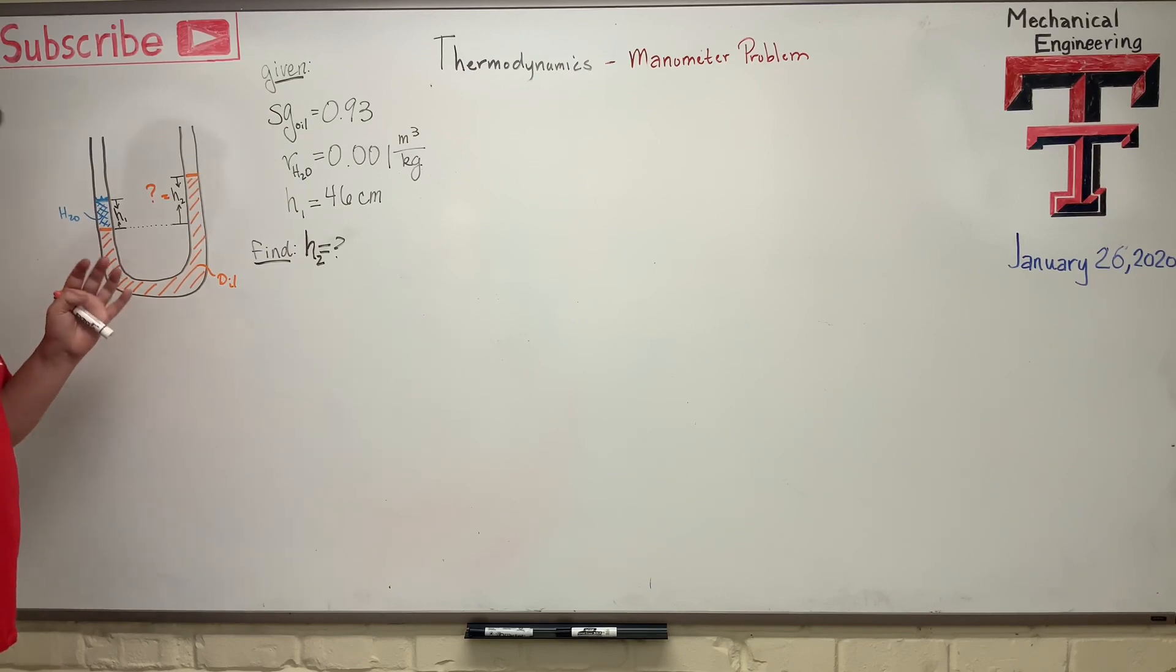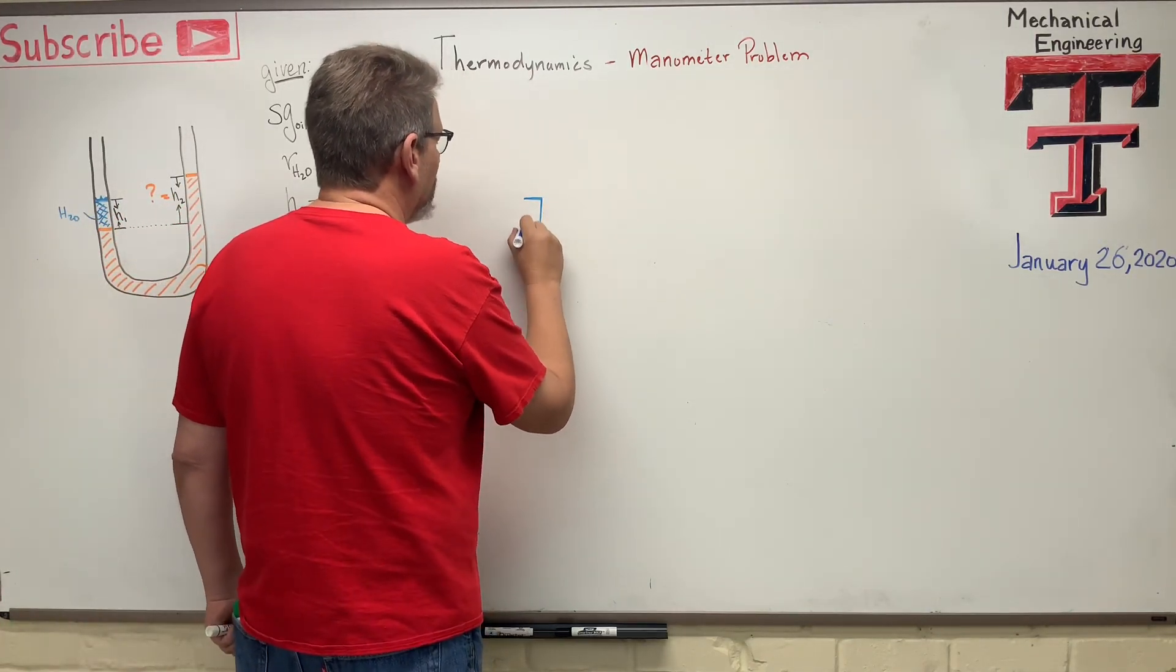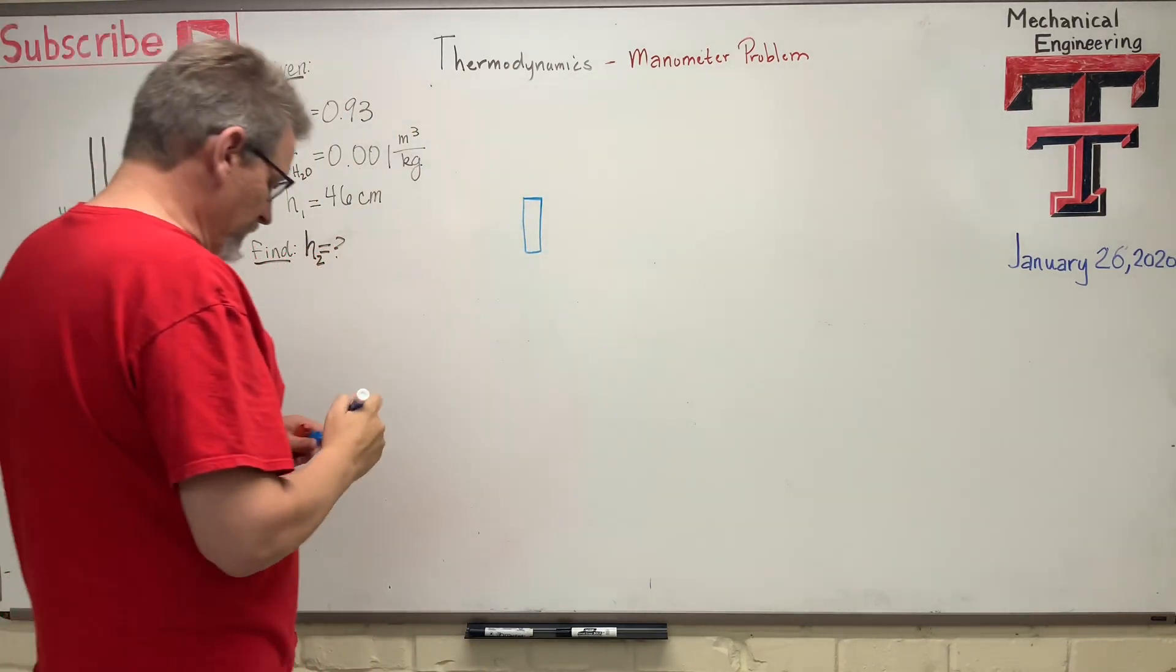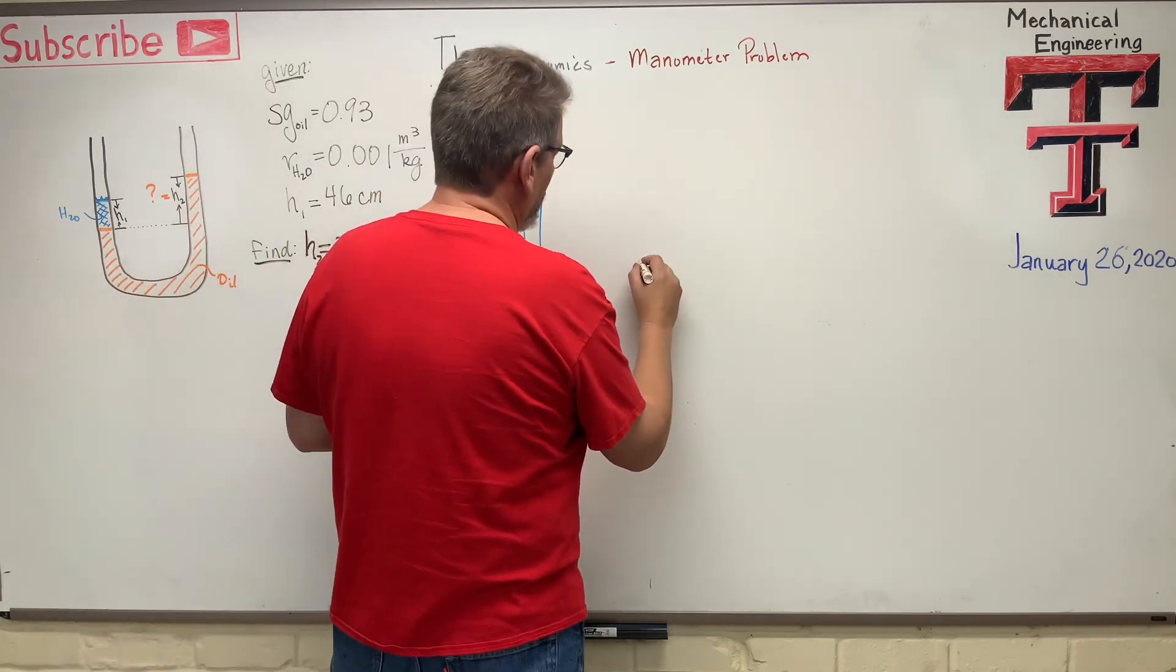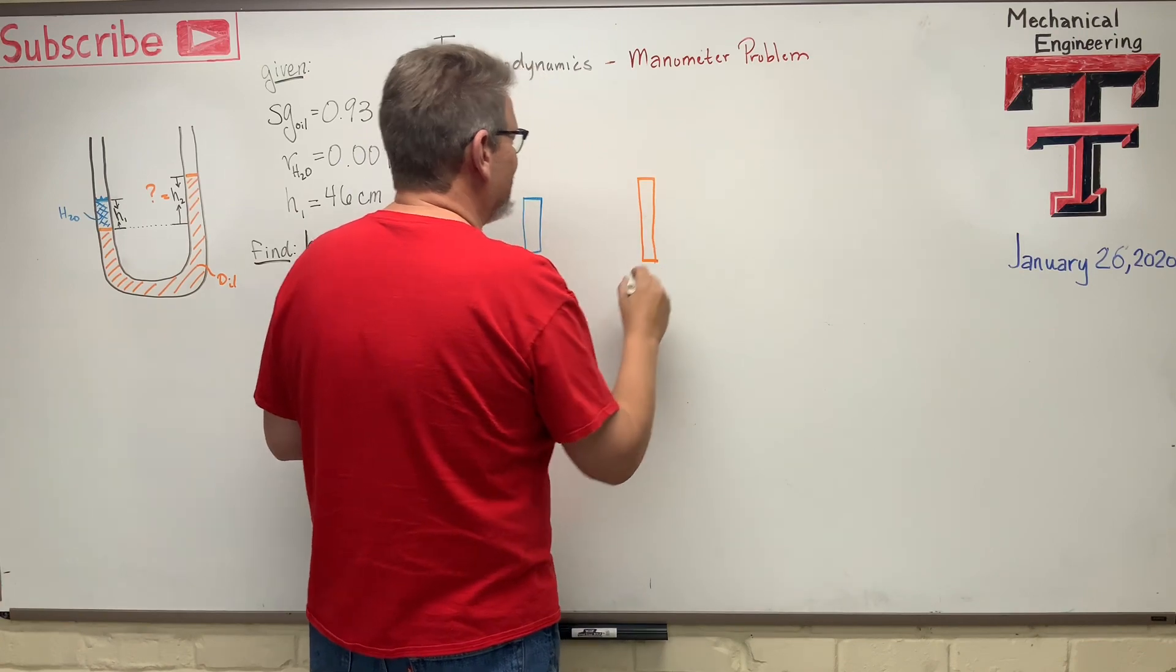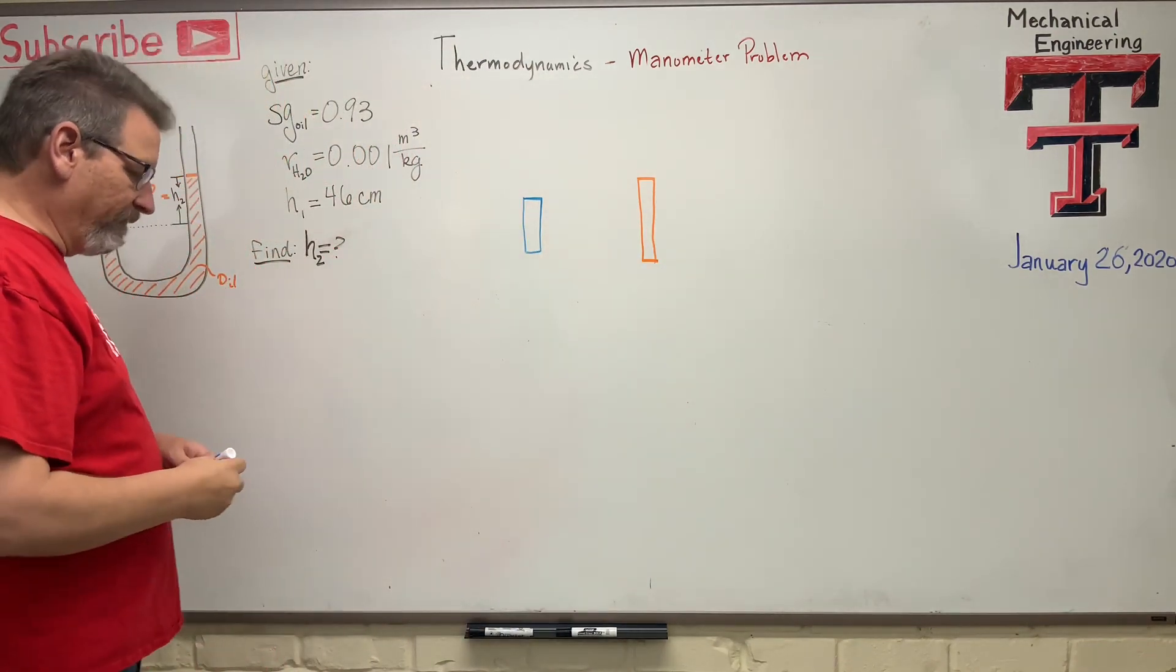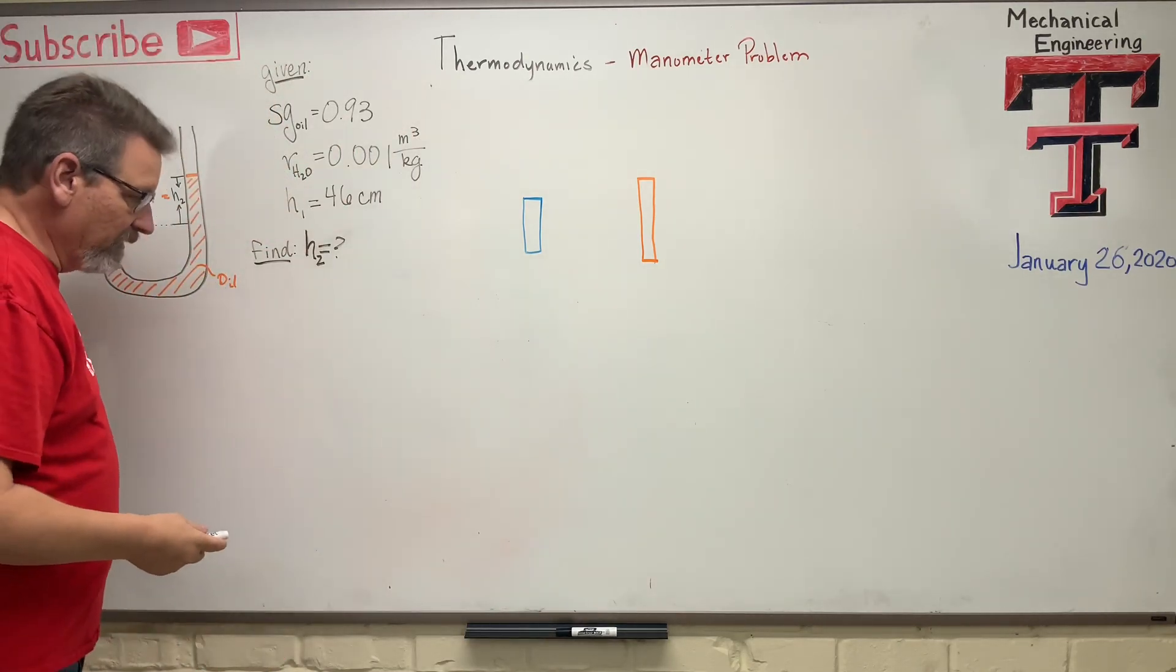And just like in statics, the first thing we're going to do is, guess what? Draw a free-body diagram. Okay, so here we go. So I have blue representing the water. So there's that column of water right there, and then the orange will represent the column of oil. Or as we say in Texas, oil.